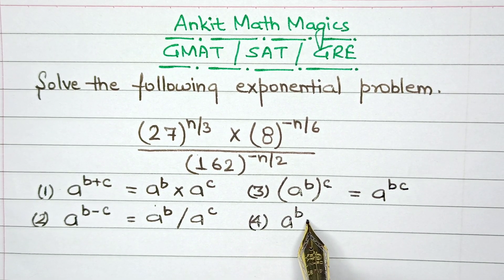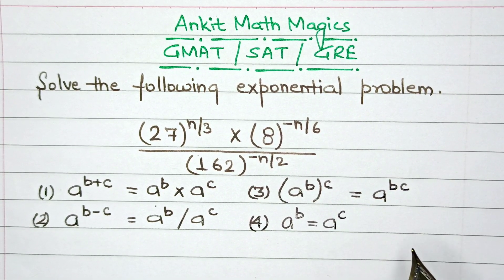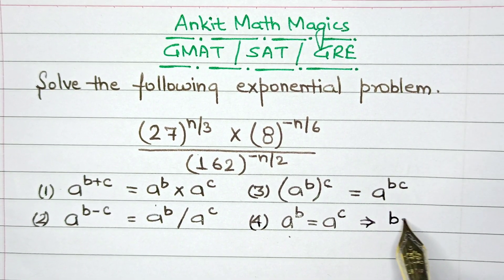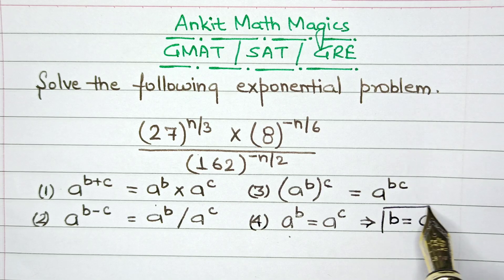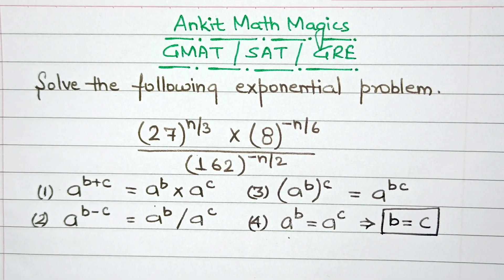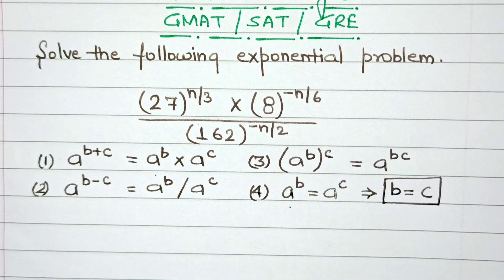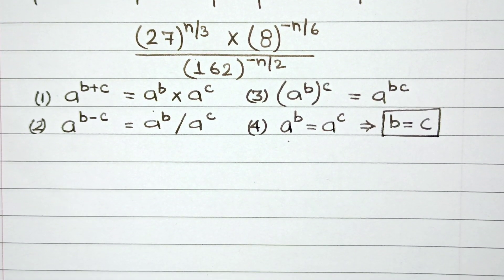And the last and important property is that if a raised to the power b is equal to a raised to the power c, then if bases are same this is only possible when the powers are equal, or in other words the powers can be equated. So these are the four fundamental properties of exponents and powers.